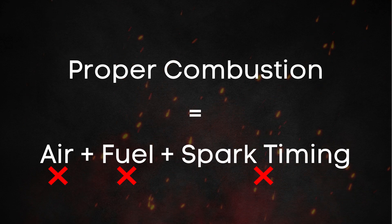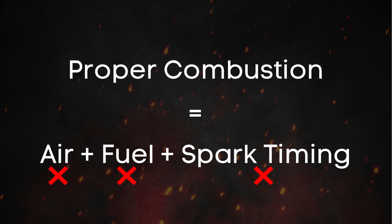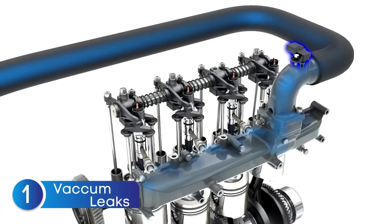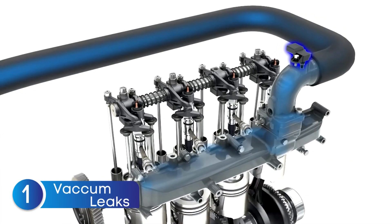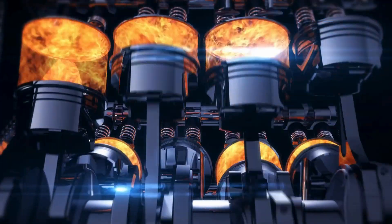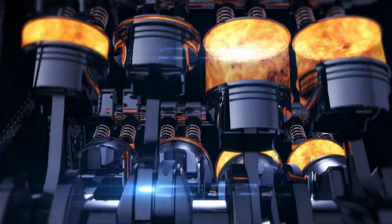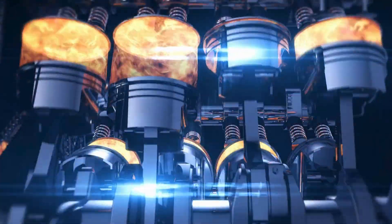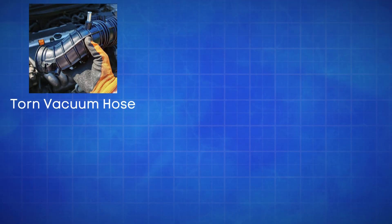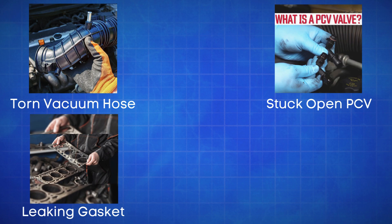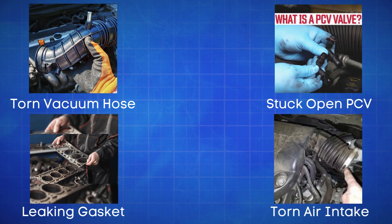First up, vacuum leaks. A vacuum leak allows unmetered air to enter the engine, throwing off the air-fuel ratio and causing the mixture to run too lean, which leads to misfires. Common locations for vacuum leaks include a torn vacuum hose, a stuck open PCV valve, a leaking intake manifold gasket, or anything torn in the air intake system after the MAP sensor.